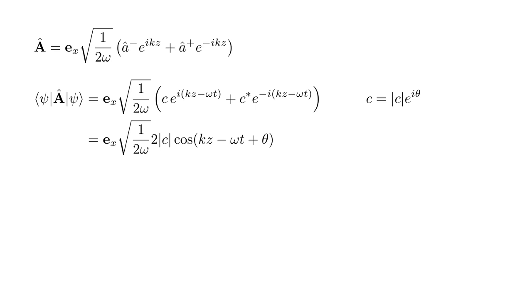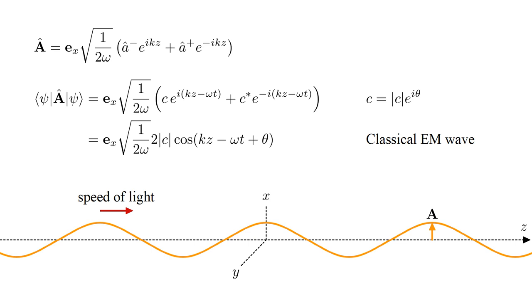the quantity in parentheses becomes 2 magnitude c, cosine(kz - ω t + θ). This is identical to the classical wave we started with, provided we identify 2 magnitude c as our original amplitude b.